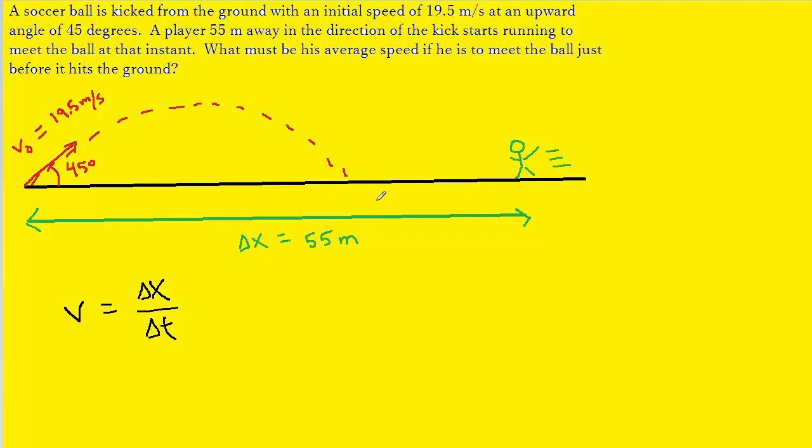Now in this case, to find the average speed of this runner, we're going to need not the displacement of 55 meters because the runner is not actually running for that full displacement, but only the displacement from where the ball hits the ground to where the runner began. For the time, we're going to need the time required for the ball to travel upward and then back down to ground level.